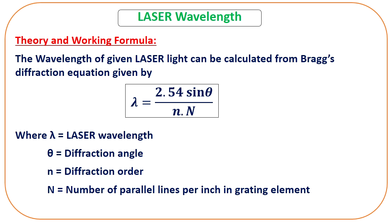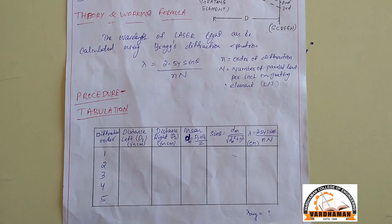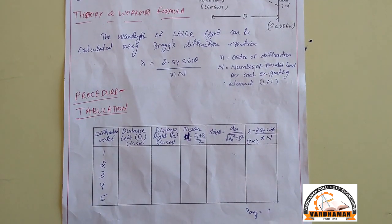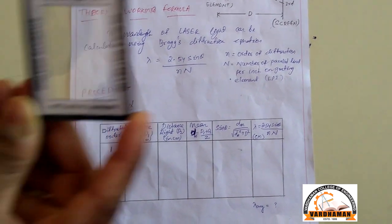Now let us see the working formula for determining the wavelength of the given laser light. Using the Bragg's diffraction equation from Bragg's law, we can use the formula: lambda equals 2.54 times sin theta divided by n times N. Here small n is the order of diffraction — first order, second order, third order and so on — and capital N is the number of parallel lines per inch on the grating element, that is LPI. The grating we are using is made up of 2500 LPI.